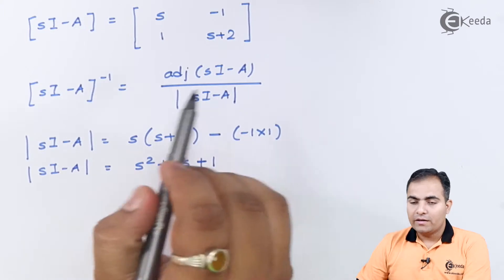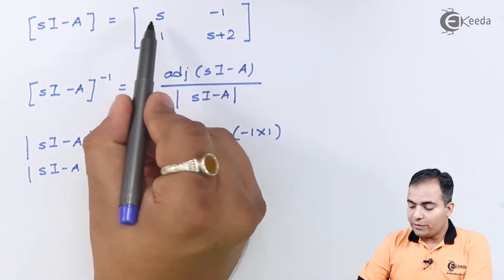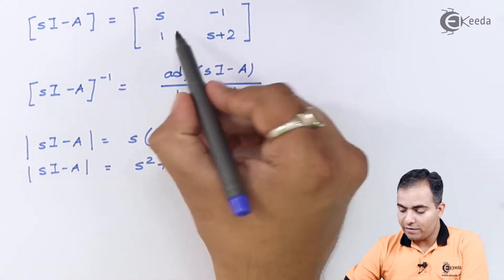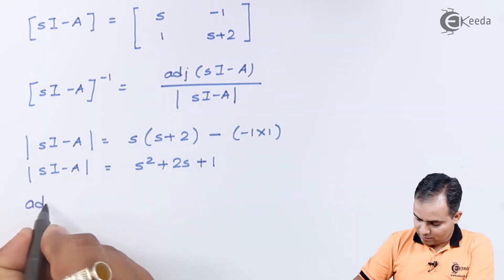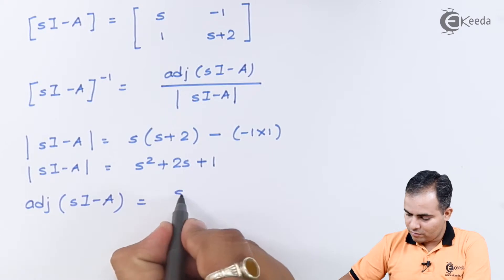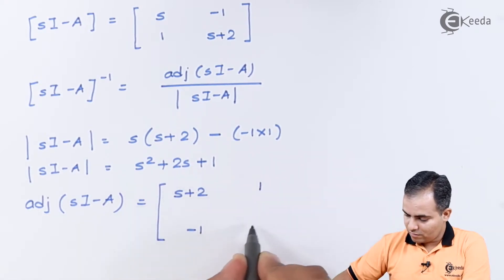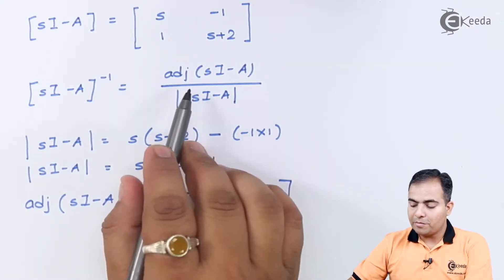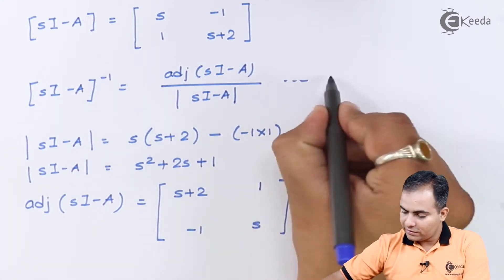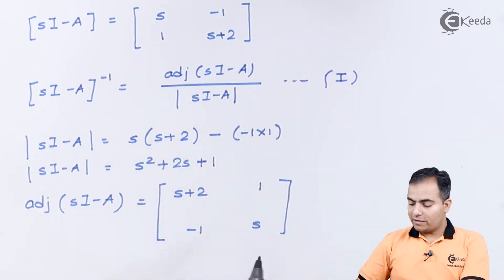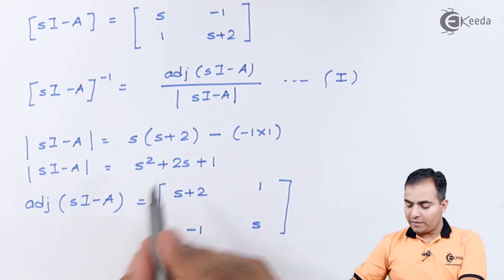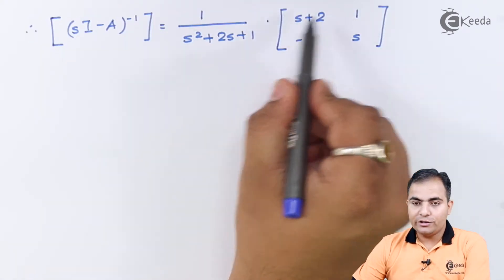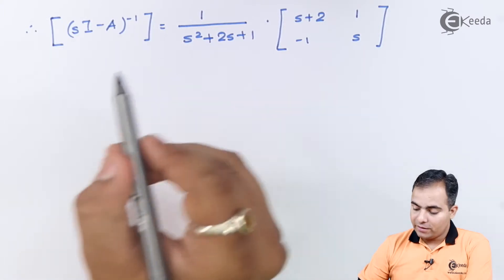To find the adjoint of (sI - A), we exchange the diagonal elements: (s+2) goes to the A position and s goes to the D position. We multiply a minus sign with elements C and B. We then substitute both the determinant and adjoint values into the inverse formula.